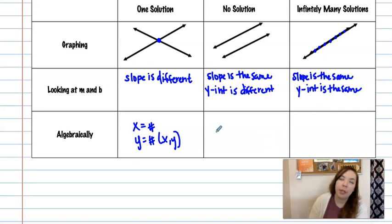No solution you're going to end up with something that is not true. If we solve it algebraically you'll end up with something like 8 equals 10. That's not true. If you have infinitely many solutions you'll end up with something like 8 equals 8 which is true. Okay and we'll get to what that looks like in our examples.